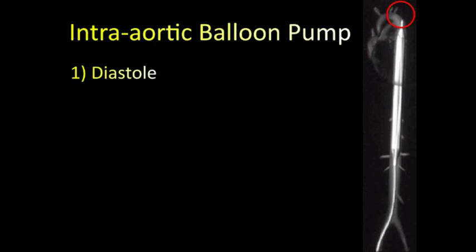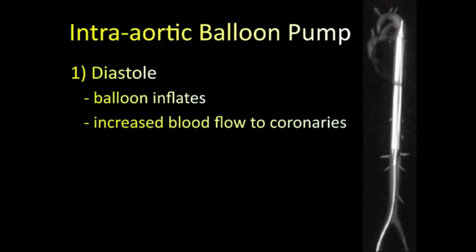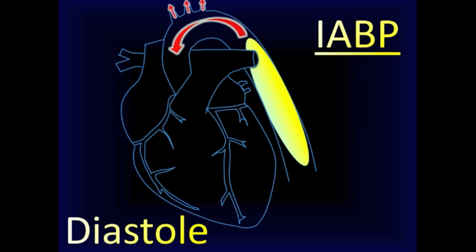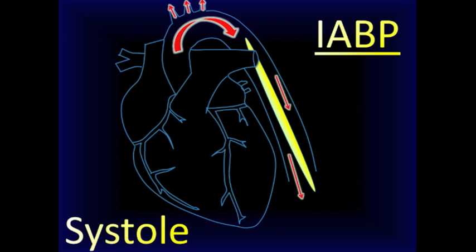The essential thing to know about these pumps is the following. In diastole, the balloon inflates, causing increased retrograde blood flow with a subsequent increase in blood flow to the coronary arteries. In systole, the balloon deflates, and the result is decreased afterload. These actions combine to decrease myocardial oxygen demand and increase myocardial oxygen supply.